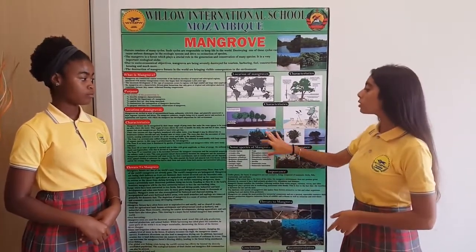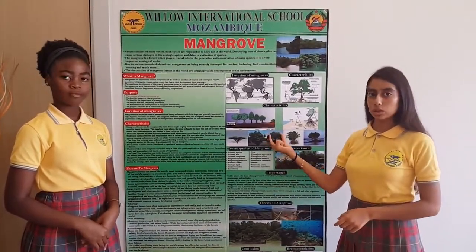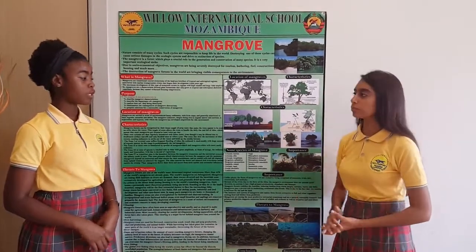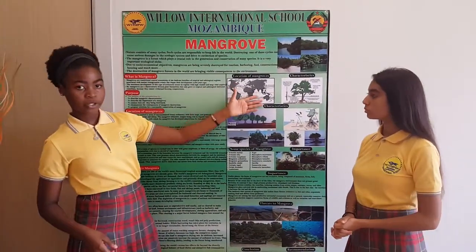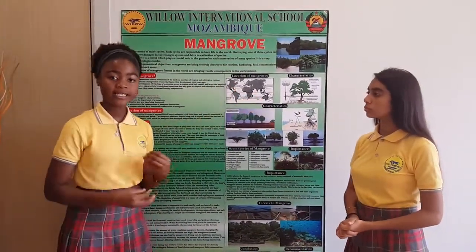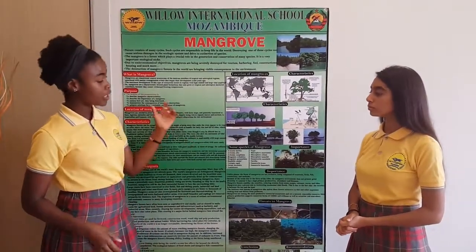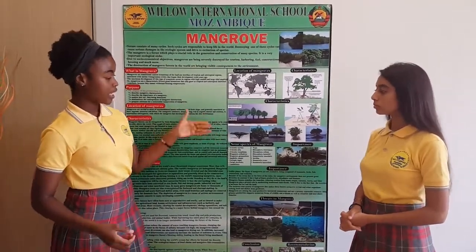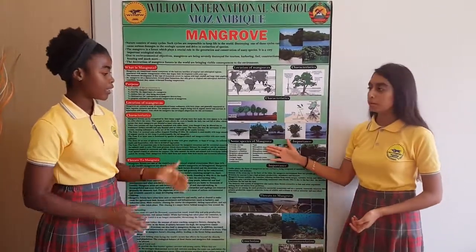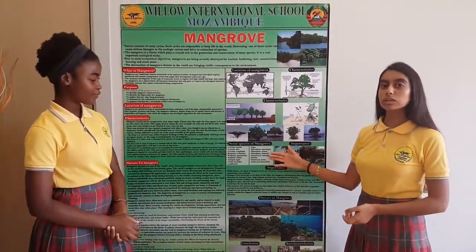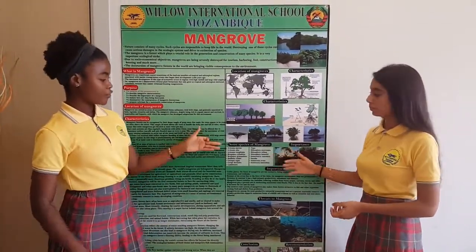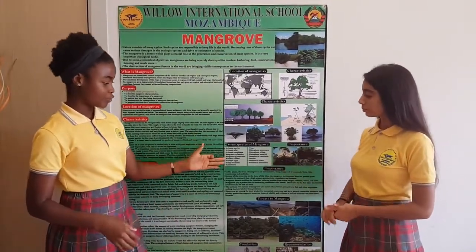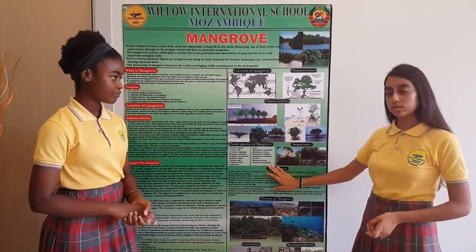As we are talking about characteristics, let's get to know more about mangroves. Here we are going to talk about some species of mangroves, such as Avicennia marina, Nipa, Avicennia alba, Rhizophora stylosa, Avicennia rumphiana, Ceriba, Bruguiera cylindrica, and Sonneratia lanceolata.